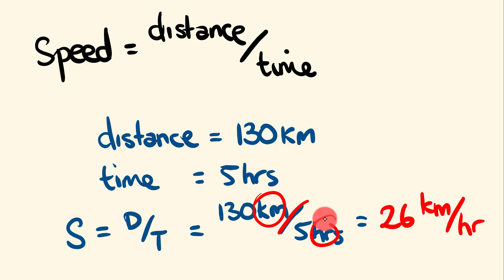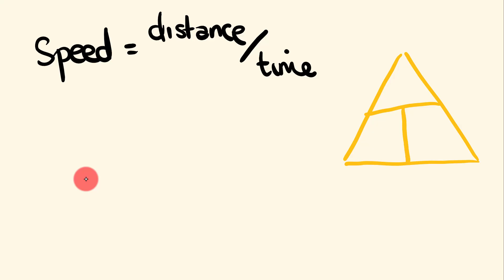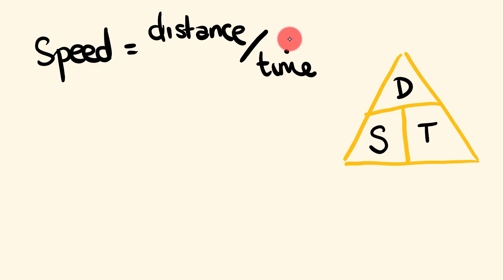What about the associated calculations — working out the distance traveled given speed and time, or the time taken given distance and speed? There's a really easy way to remember these formulas. You draw yourself a triangle — a nice equilateral triangle with a division line in it. Inside, we write the formula: speed equals distance divided by time. Speed goes in the bottom left, distance on top, and time on the bottom right.